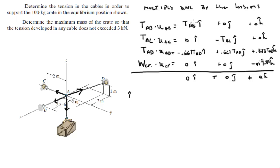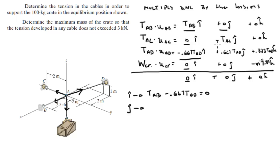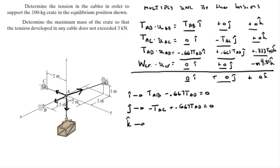Adding the i-components together, the j-components together, and the k-components together gives three equations. Adding the i-components: T_AB - 0.667·T_AD = 0. Adding the j-components: 0.667·T_AD = 0. Adding the k-components: 0.333·T_AD - 9.81·M = 0.